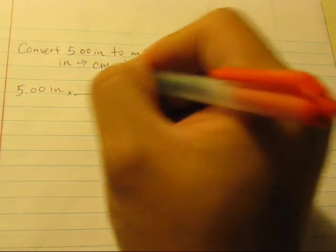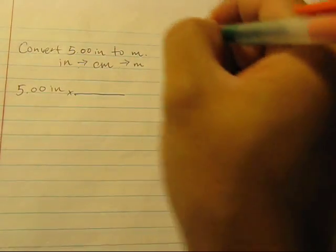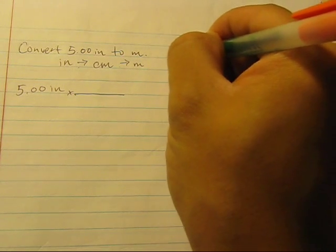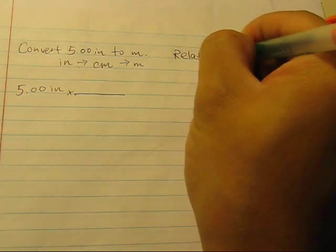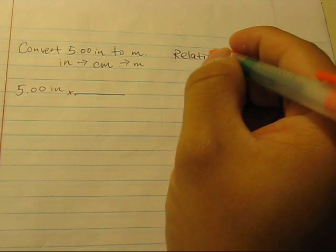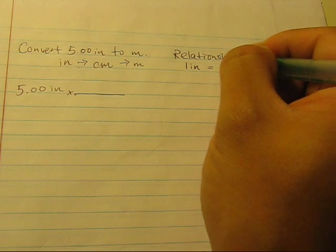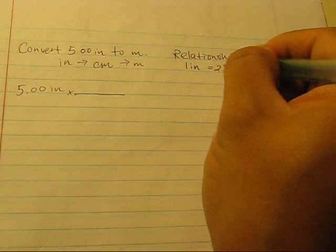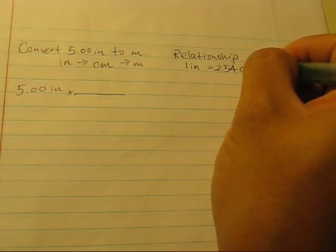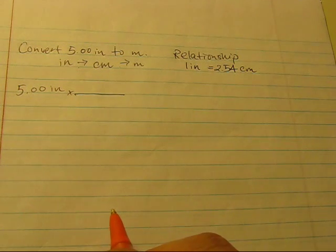Since we got two arrows, we have to have two relationships. Our first relationship is between inches and centimeters. And from the previous example, we know that one inch is equal to 2.54 centimeters.